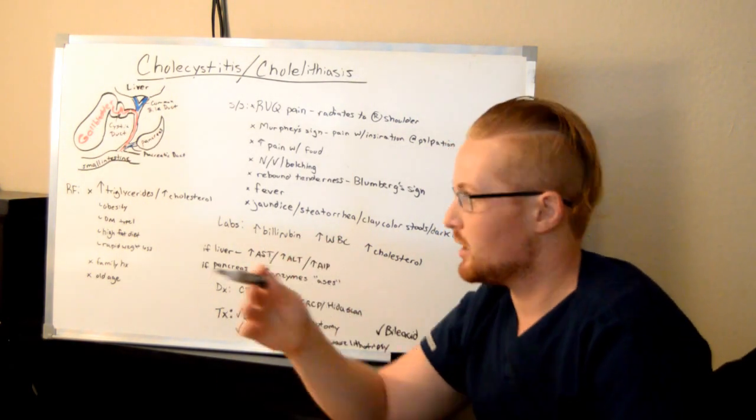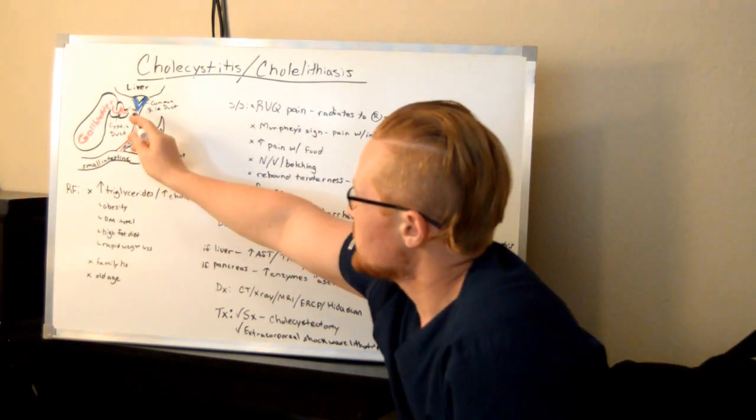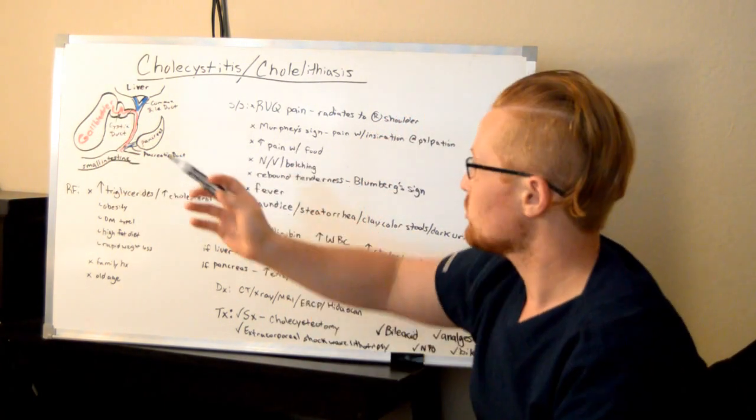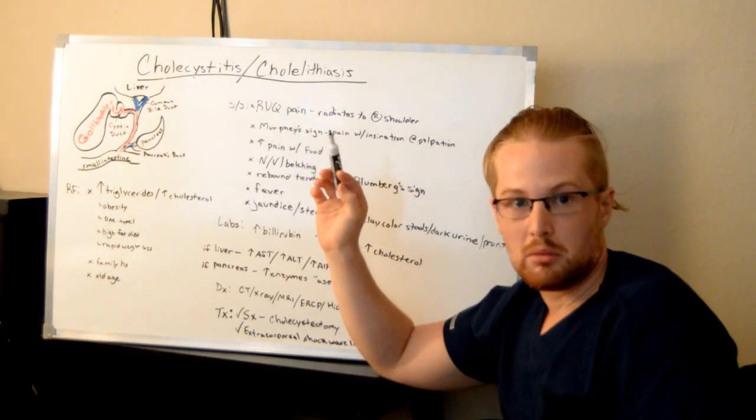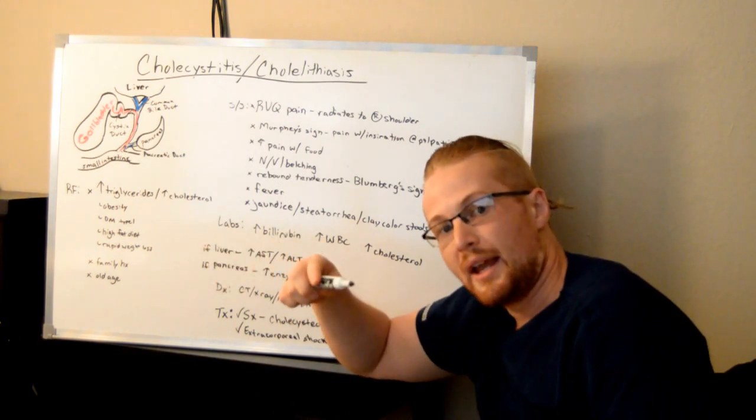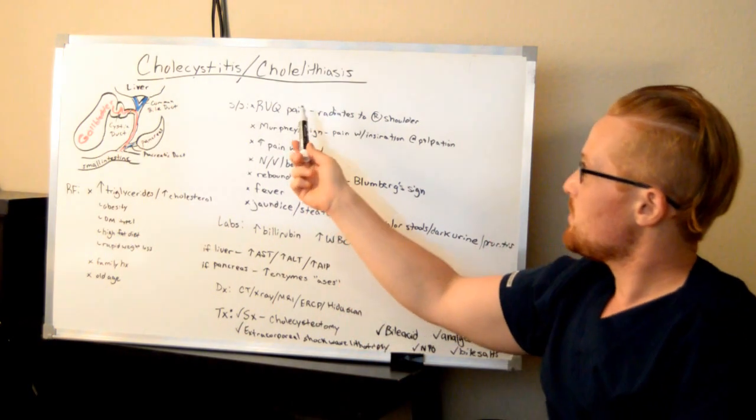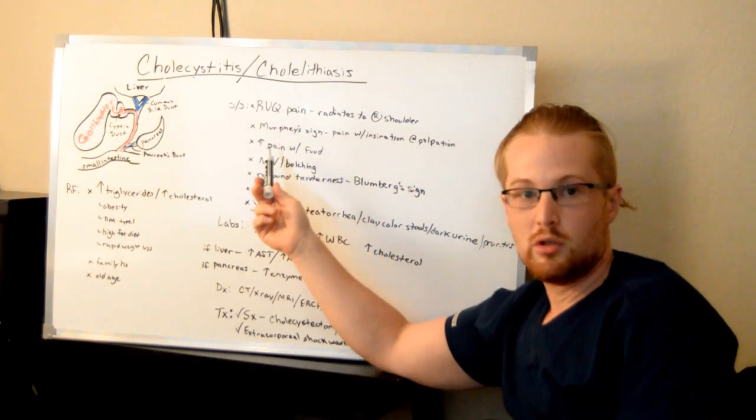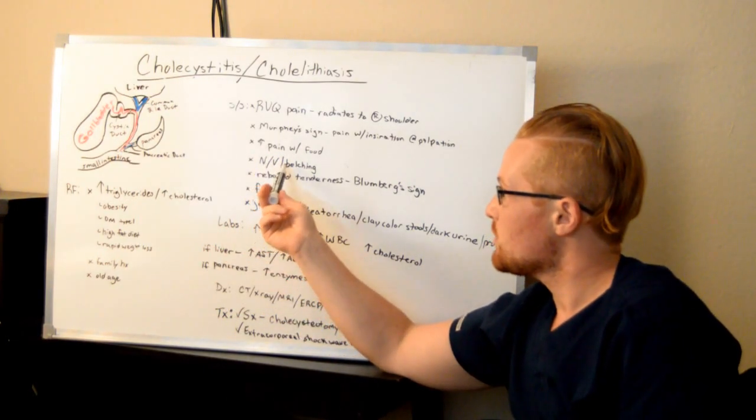So what are some signs and symptoms? What happens is you're going to have all the bile backing up and the gallbladder is now inflamed and swollen. You're going to have pain in the right upper quadrant and that pain can radiate to the shoulder. That's something I like to put on the tests, is that shoulder pain sometimes could be the gallbladder. We know it's in the right upper quadrant, can go to the shoulder, increases with food because the gallbladder is trying to digest the food that you ate, and then you'll see nausea and vomiting.